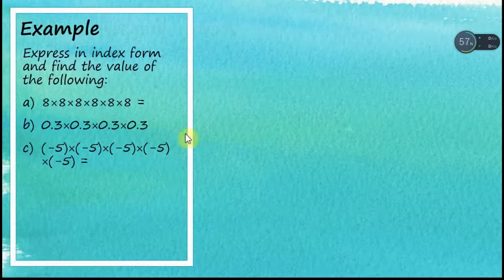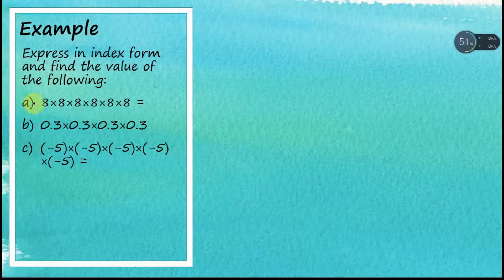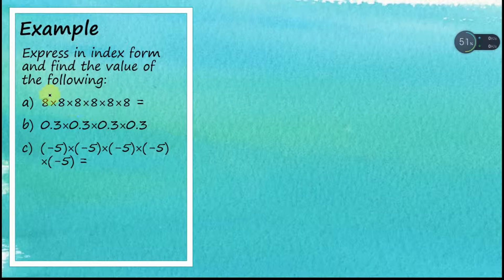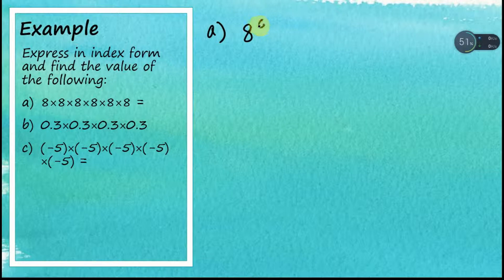Let's see this example: express in index form and find the values of the following. Starting with part a, we have the number eight multiplied by itself six times. The question asks us to express it in index form, so we write this as eight to the power of six.